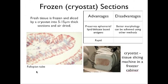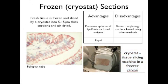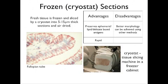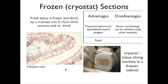These are the frozen cryostat sections. A cryostat is a tissue slicing machine in a freezer cabinet. It slices fresh tissue which has been frozen into 5 to 15 micrometer thick sections, and it is air dried. This is an example of the fallopian tube. The advantage is that because it's frozen, it preserves ephemeral, lipid, and delicate-based antigens, and it's pretty rapid. However, the disadvantage is that there are other methods that can allow us to get better morphological details, better shapes, and better images.